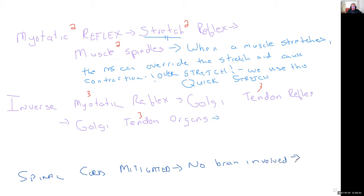It's a two-neuron arc because there are two neurons: a sensory neuron sends the signal back, the spinal cord processes it, and a motor neuron sends the signal back out. The wording literally tells you what it's doing. The signal arcs between a sensory and a motor neuron — like a boomerang: I send it out, it goes up to my spine, it comes back and fires the muscle. The brain does receive the sensation, but the brain isn't what triggers the reflex — it's the spinal cord.